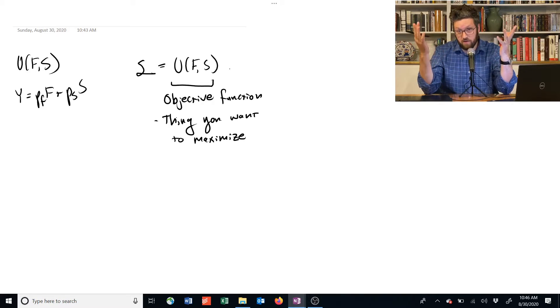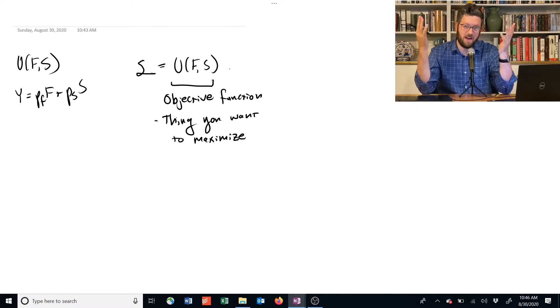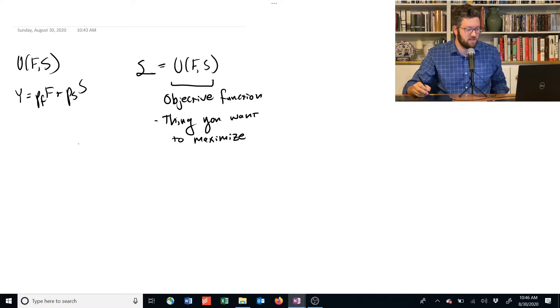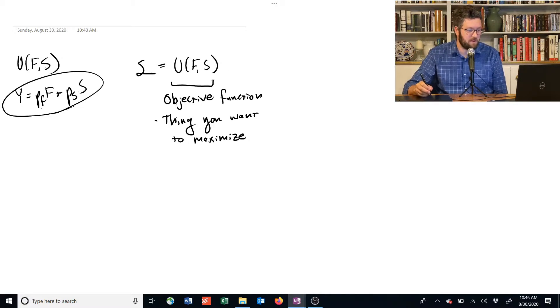is you should consume an infinite amount, and that's not an option to us. We have to somehow add in the fact that this person is constrained, and the constraint is that the amount of food and shelter they buy has to be equal to or less than their budget. So how do we incorporate that?